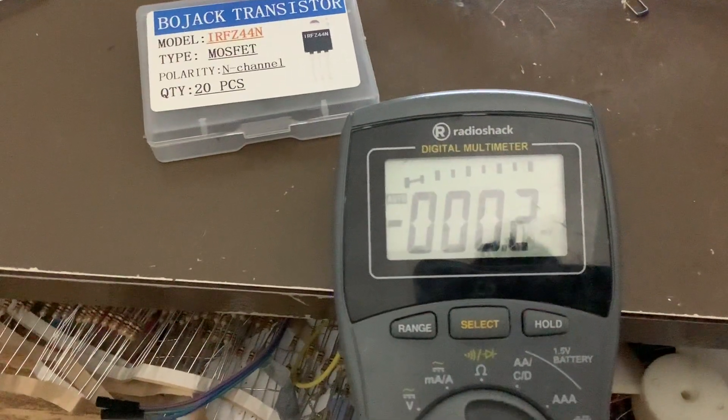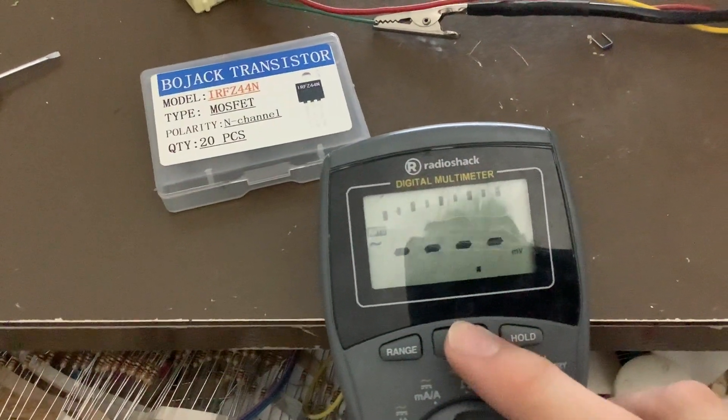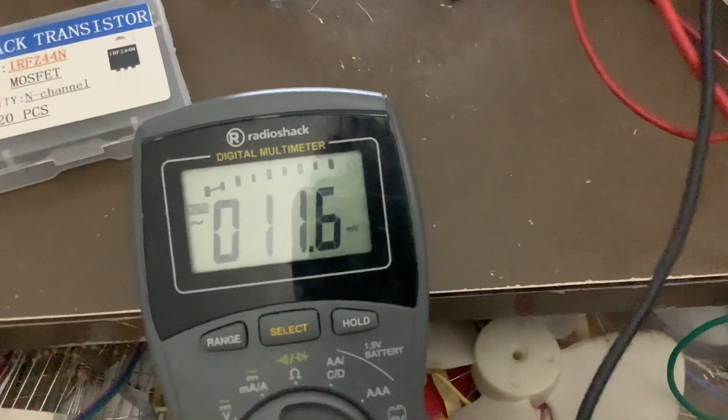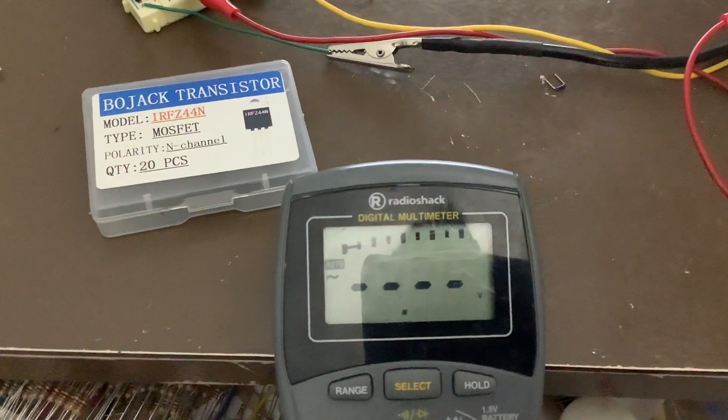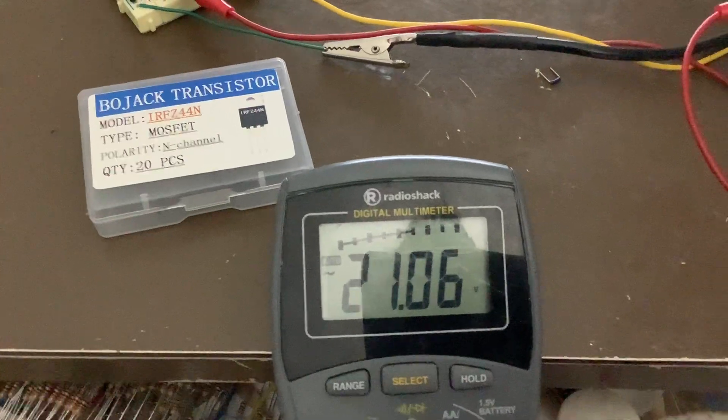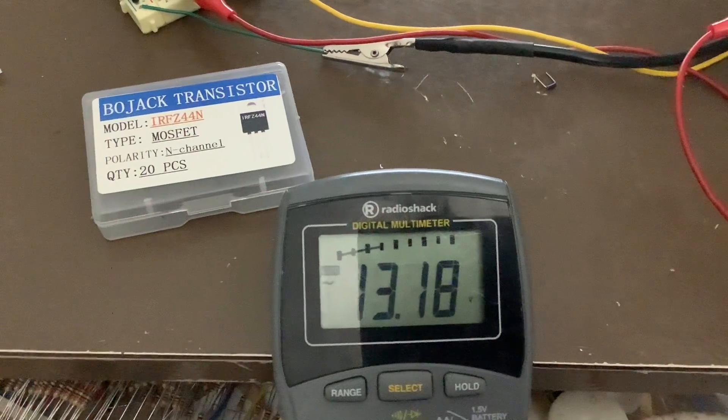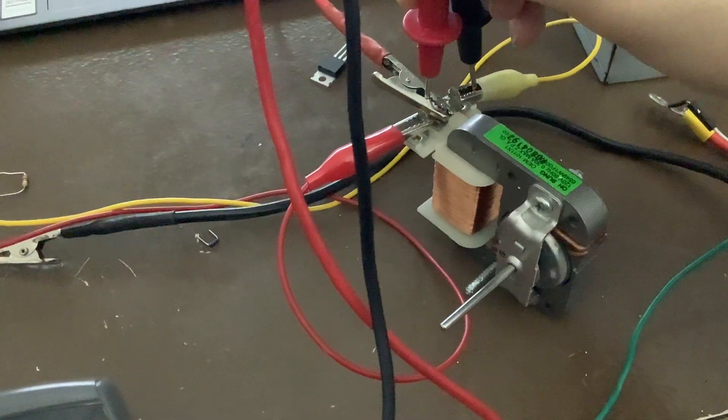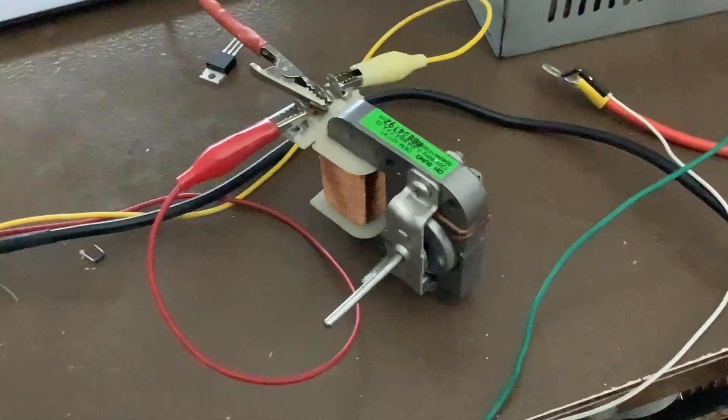So this one says 10 volts. Well that's weird. But yeah so that's because it's measuring in DC. Now we're going to measure in AC and it should say actually what it is and it should be 24 volts. Okay so maybe it's not exactly center tapped. I'm not sure. I just pulled this motor out of the trash really.